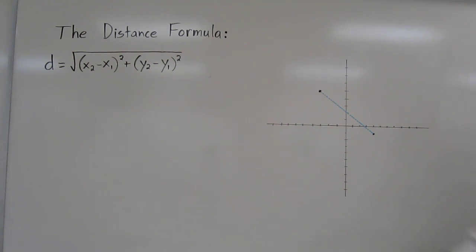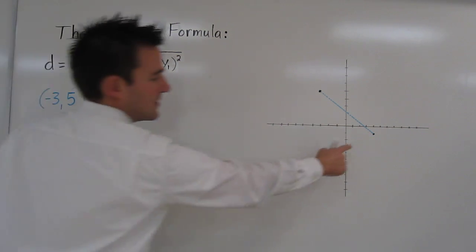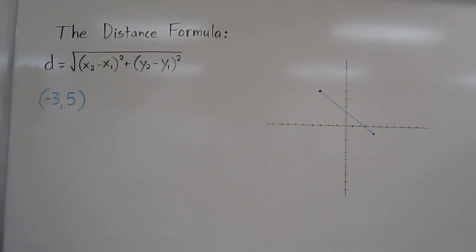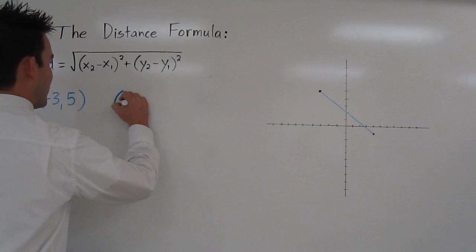Well, in order to find that, we need to know the coordinates of these two points, and they're actually given to us in the problem. The coordinates of this first point are (-3, 5). And the coordinates of this second point down there are (4, -1).